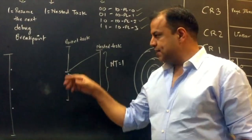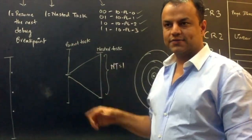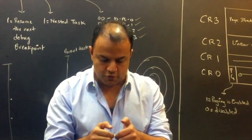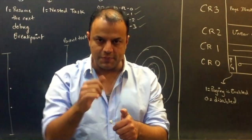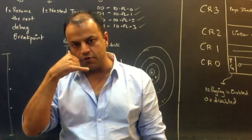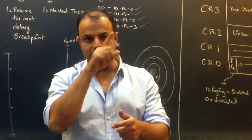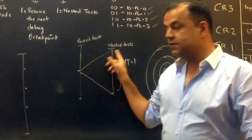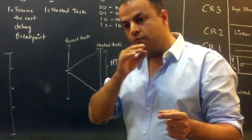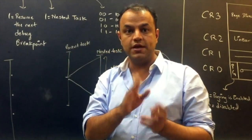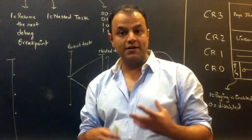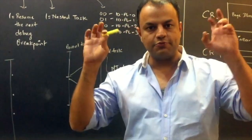The 386 supports task switching — it allows the processor to go from one task to another. For example, you're playing a game on your phone and suddenly there's a call. The game is suspended and the call is entertained — that's a task switch. When the call is over, you don't restart the game, you resume it. This is different from an interrupt; task switching means leaving one program entirely and going to another.